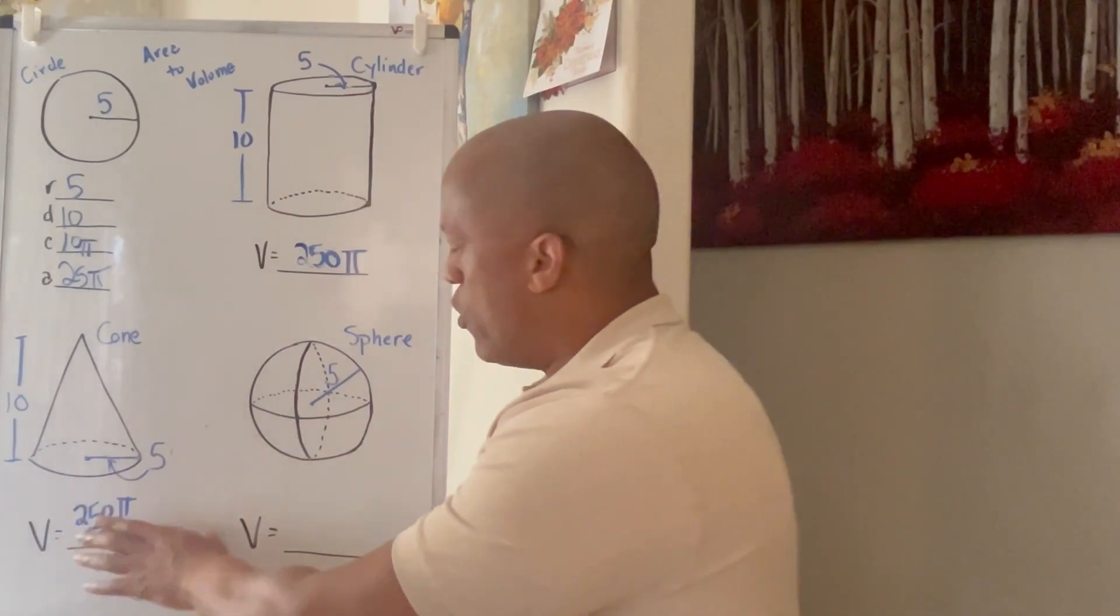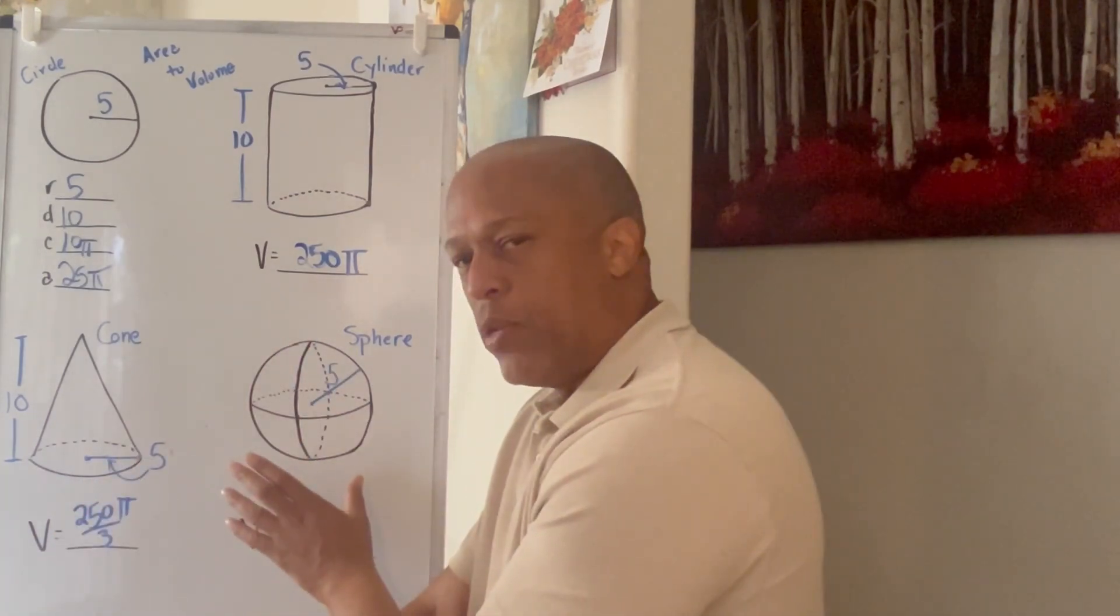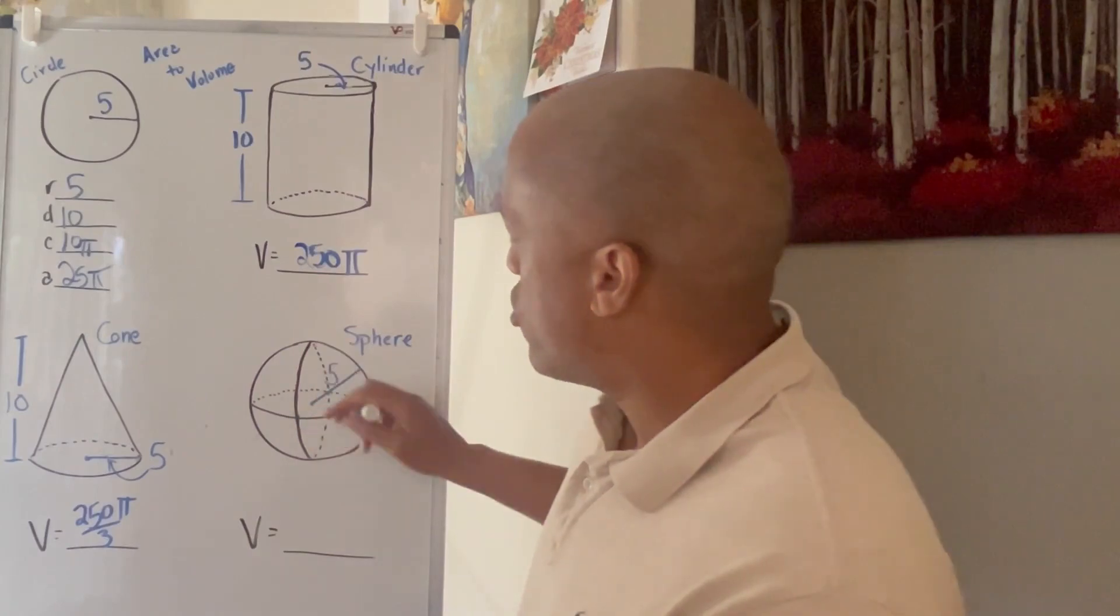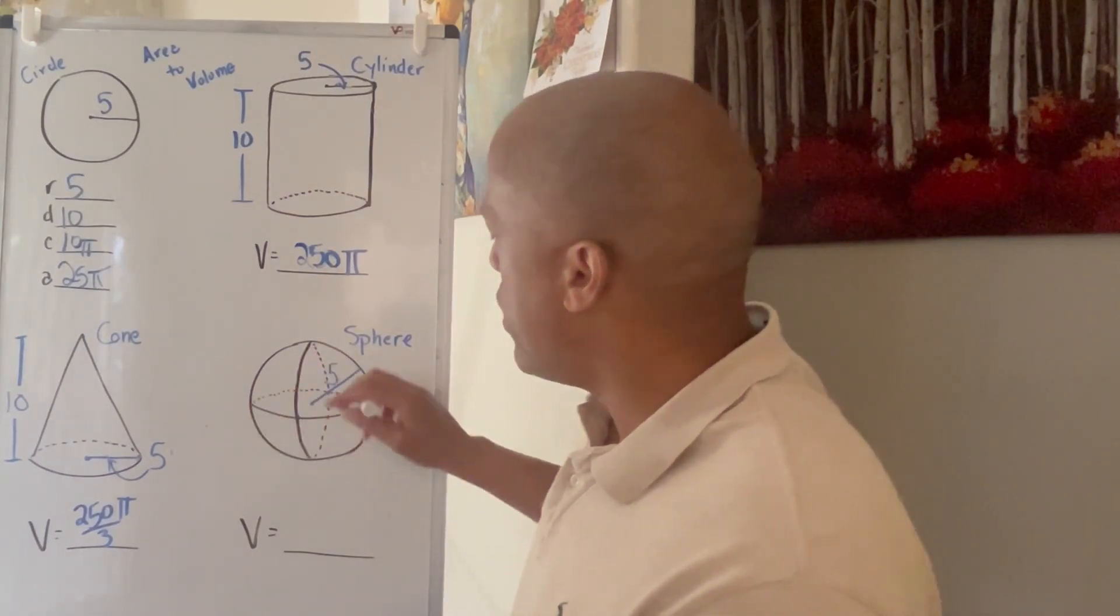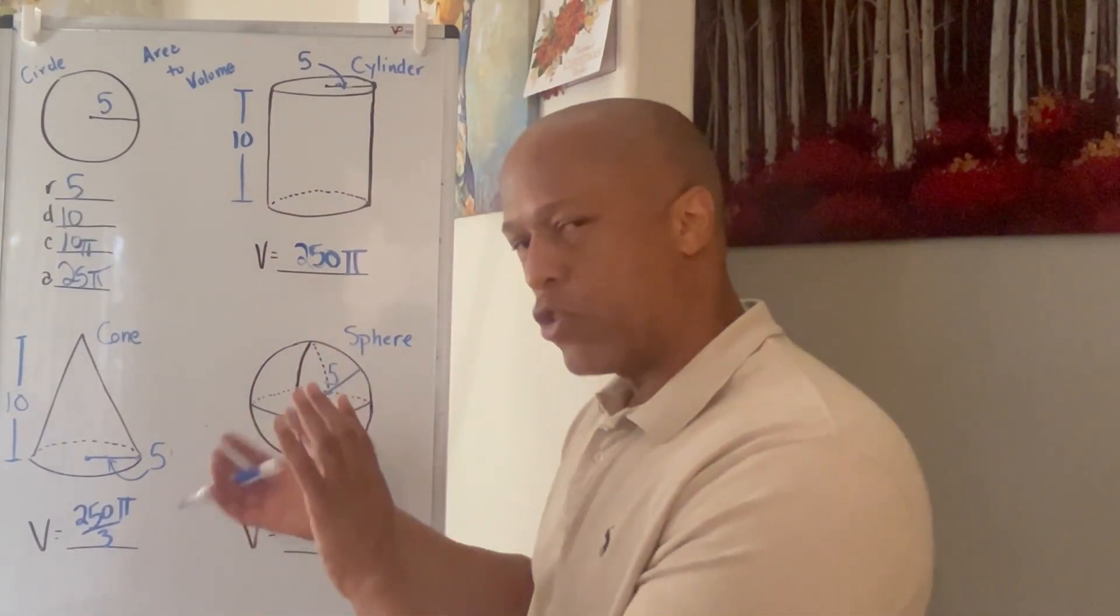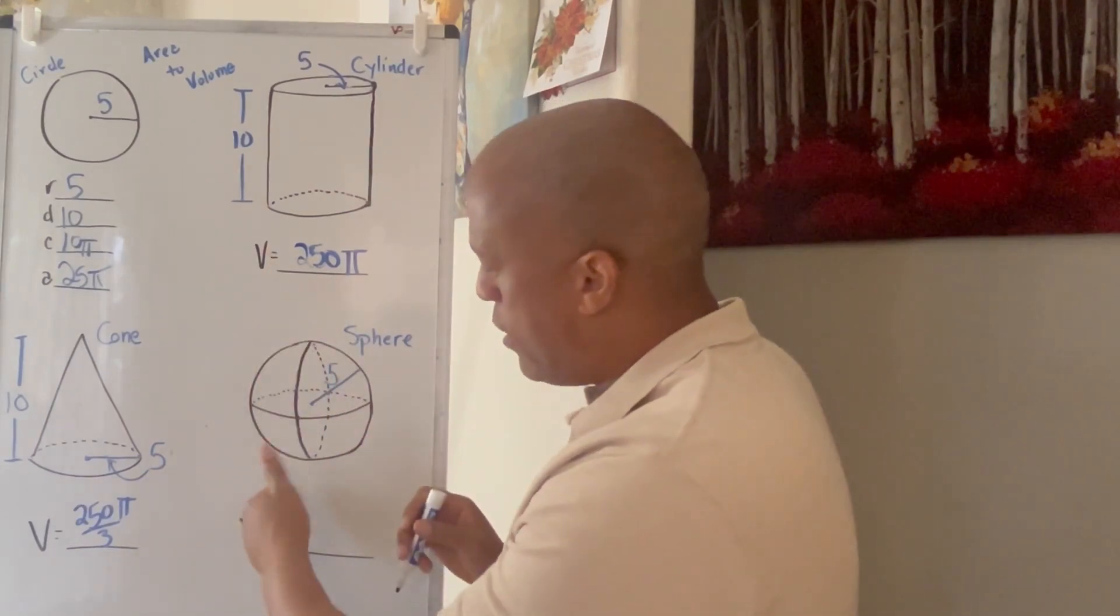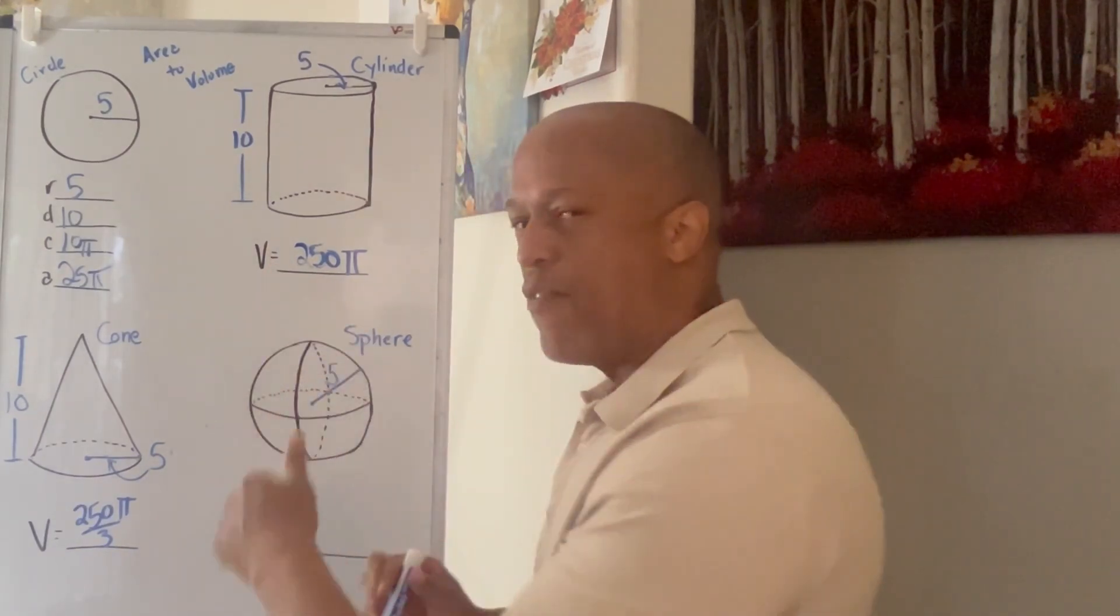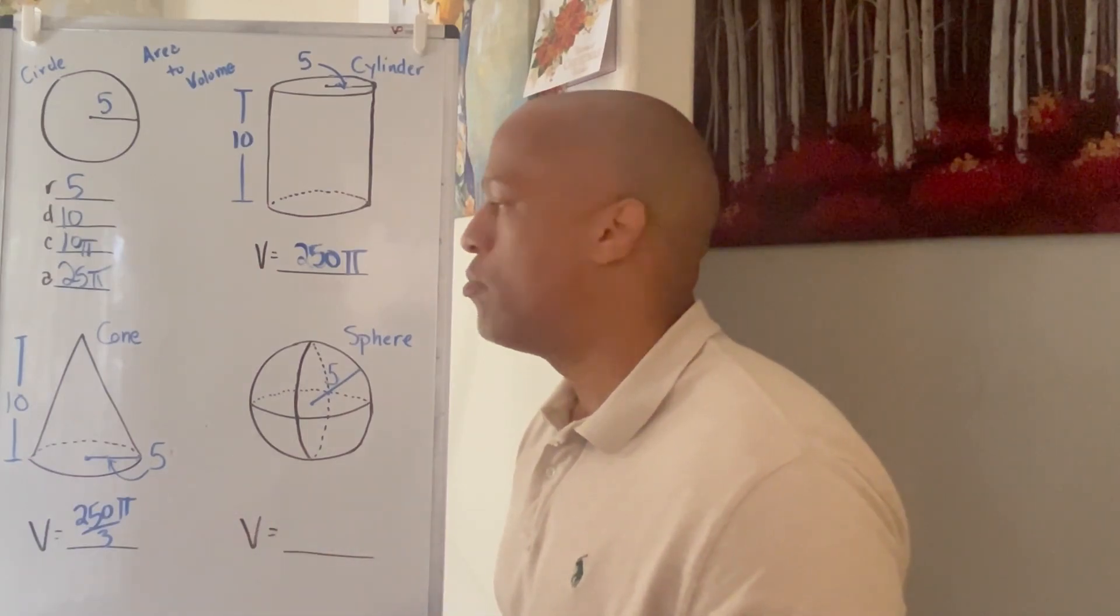Now, interestingly enough, when we have a sphere, there's another relationship that we can think about. If I take this sphere and I think of it as just splitting it up into four equal parts, this is an actual three-dimensional object, like a ball. And if I take and cut it here and cut it there, what I'll have is I'll have four different parts. These parts now can be considered cones.